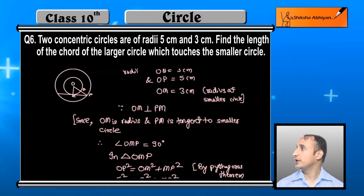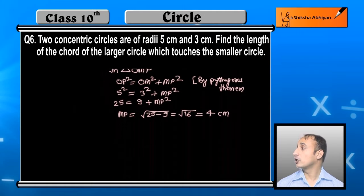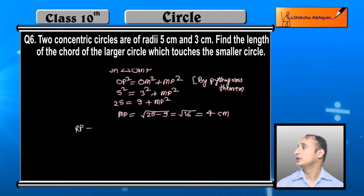Now if you see here, I will take one more point, this point is R. M is the midpoint of PR. M is the midpoint of the chord RP.